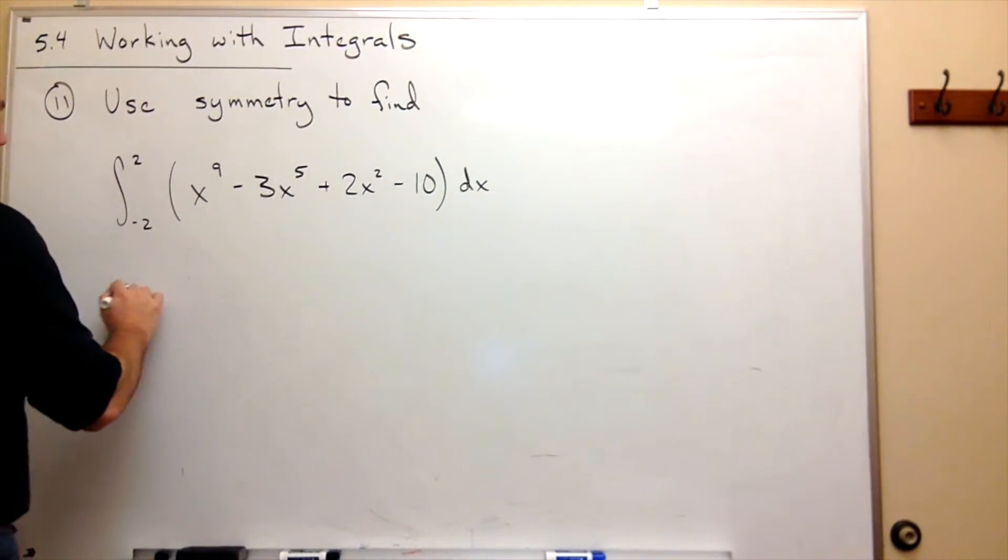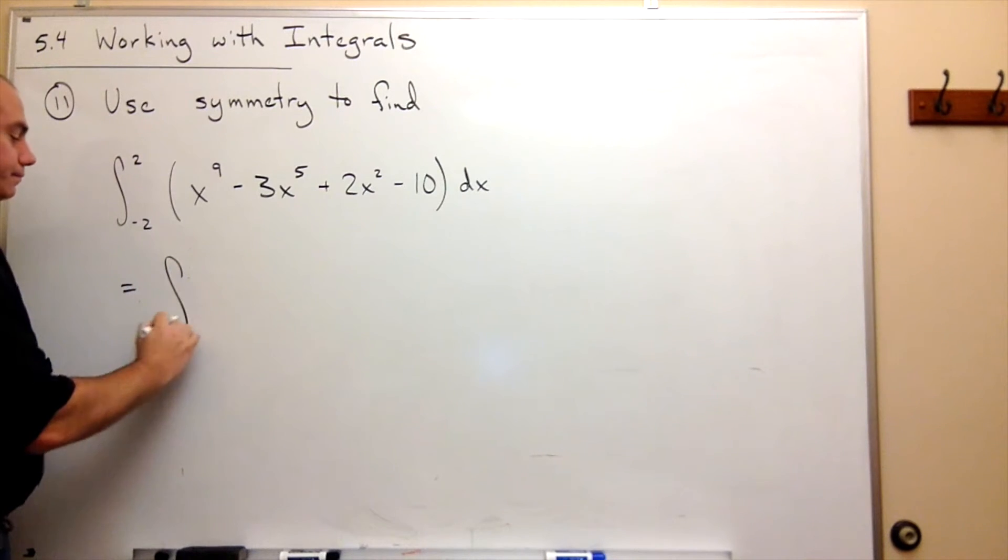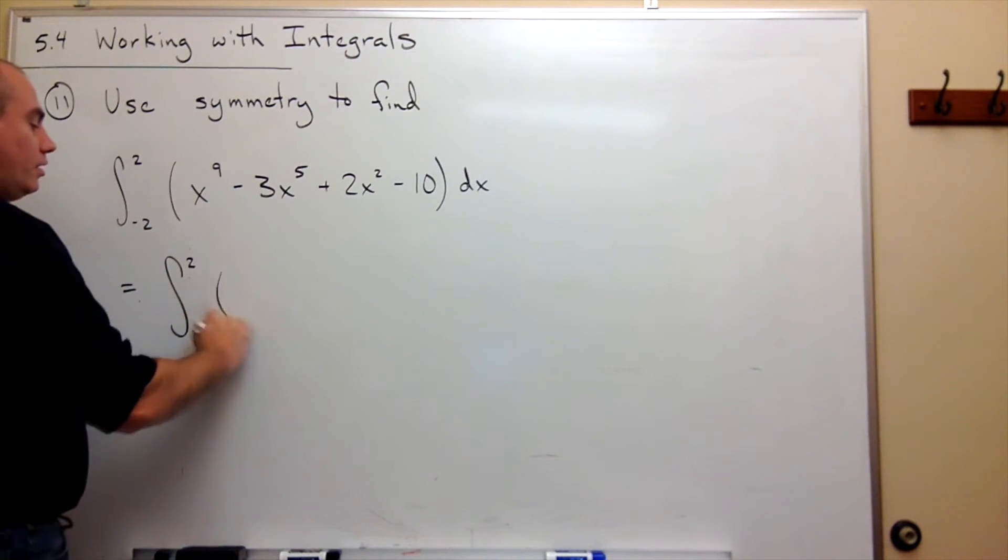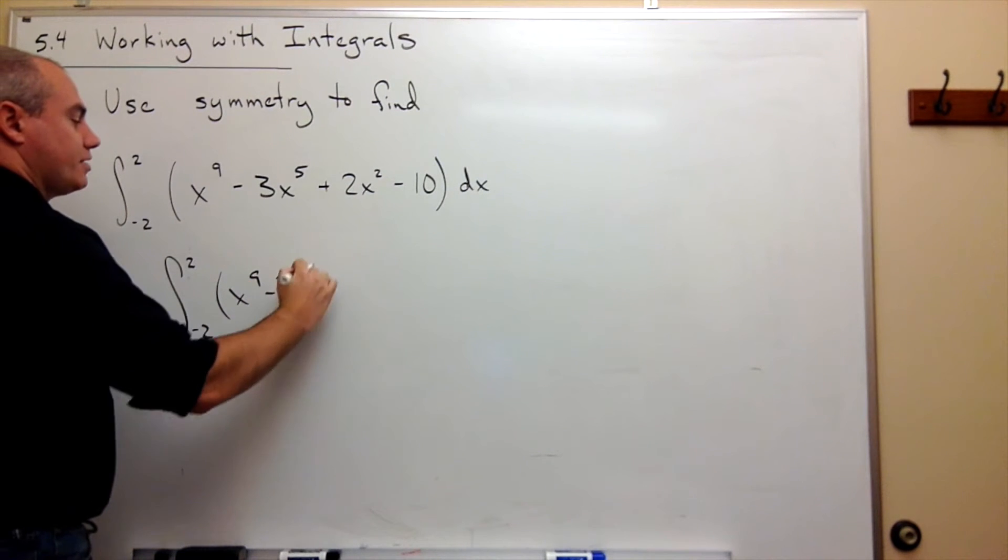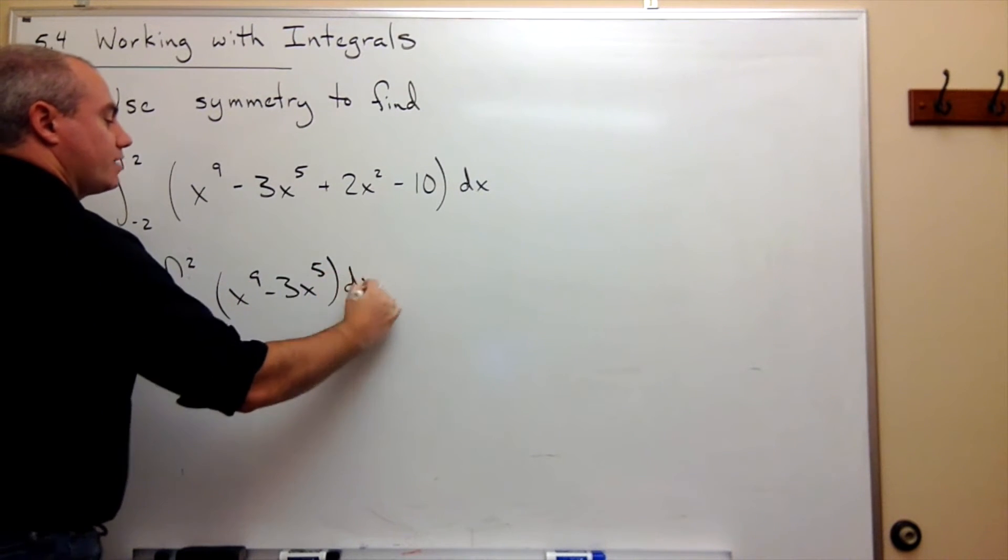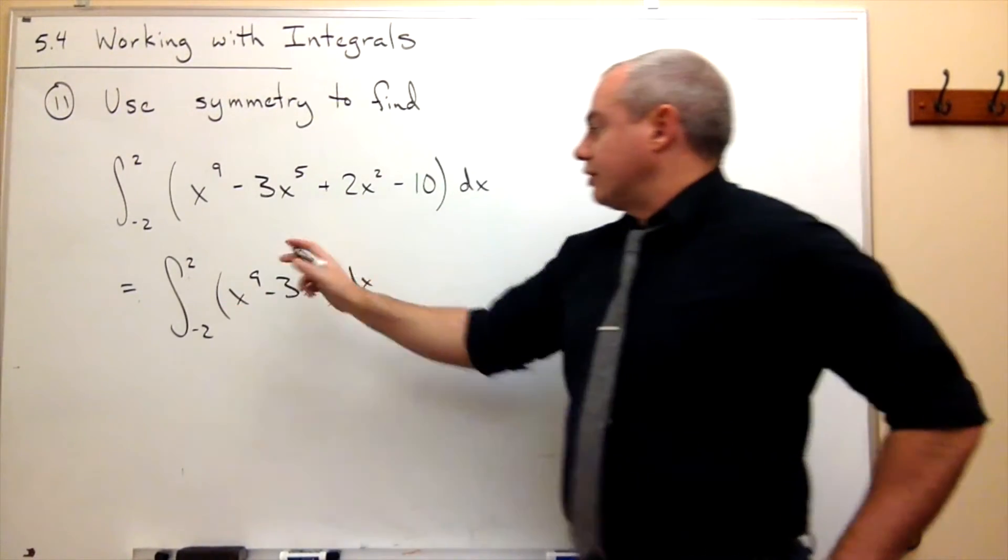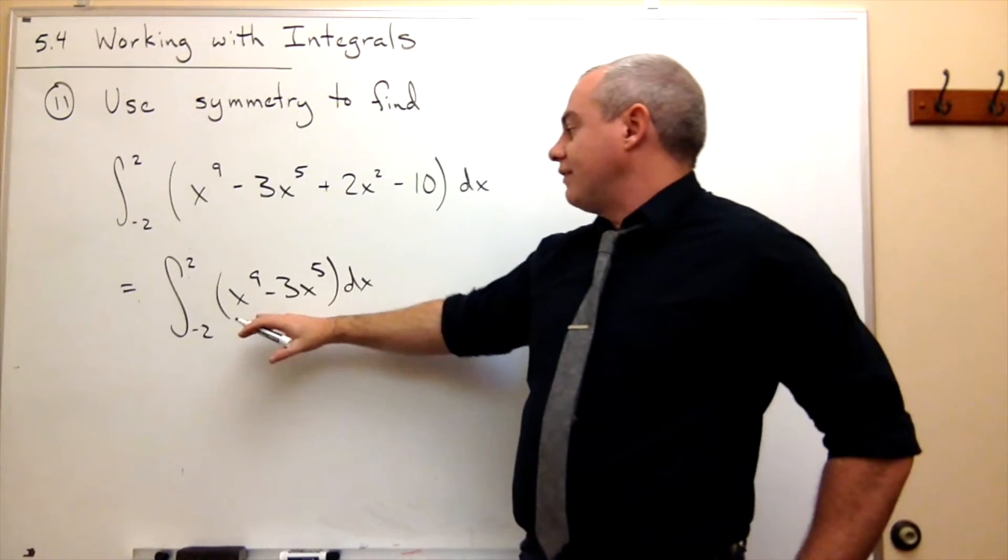So I could rewrite this integral as the integral from negative 2 to 2 of x to the ninth minus 3x to the fifth dx. So that's an odd function.